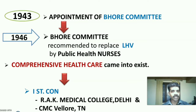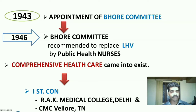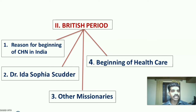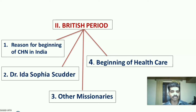In 1943, the Government of India appointed the Bhore Committee to identify then-existing health problems and submit a report. During 1946, the Bhore Committee gave its report with the recommendation to replace lady health visitors with public health nurses. The first comprehensive health care in India came into existence in 1946. Also in 1946, the first college of nursing was started at RIK Medical College in Delhi and CMC Vellore in Tamil Nadu.